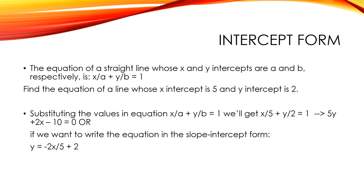For example: find the equation of a line whose X intercept is 5 and Y intercept is 2. Substituting into X/A + Y/B = 1, we get X/5 + Y/2 = 1, which gives 5Y + 2X − 10 = 0. In slope-intercept form: Y = −(2/5)X + 2.